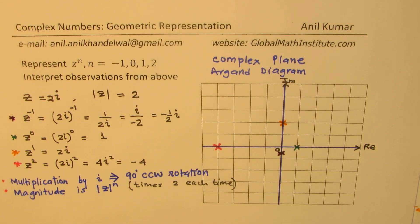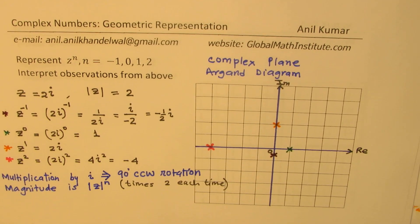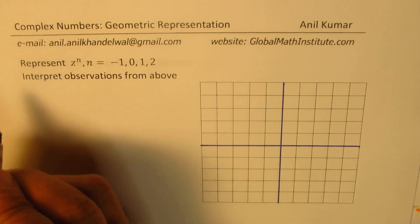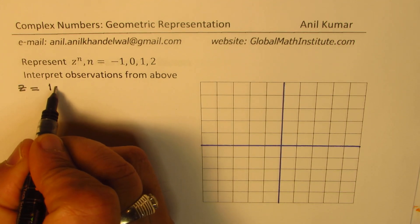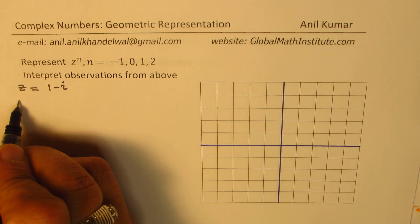So we did observe that two things happen: one is a counterclockwise rotation by 90 degrees, and second is that the magnitude to the power of n must be considered. Now, keeping this in view, let's take some general complex numbers and see what really happens. This time, let me take a complex number z. We'll keep it simple — let's say 1 minus i. Let's let this be our complex number.